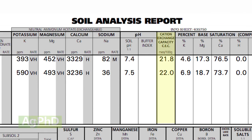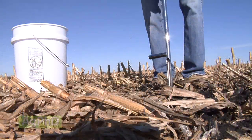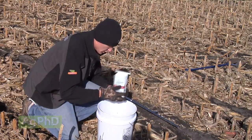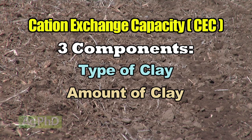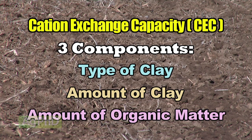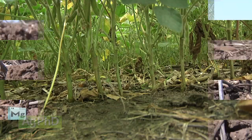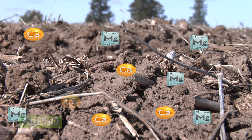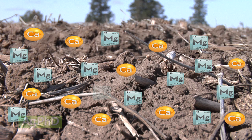Cation exchange capacity gives farmers a more exact way to measure things out in the field. It's a simple soil test that measures the type of clay in the soil, the amount of clay, and the amount of organic matter in the soil. A cation is simply a positively charged element. When soils have a negative charge, the cation exchange capacity tells us how many positively charged nutrients — like calcium or magnesium — our soils can hold at any one time.